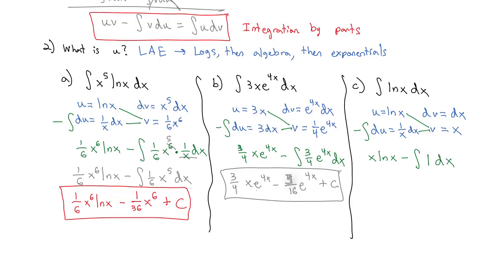That antiderivative is simple: x natural log of x minus x plus c. Now we know the antiderivative of natural log of x is x times natural log of x minus x. Take the time to memorize the integration by parts formula — the next video will look at a slightly different setup for solving these same problems.